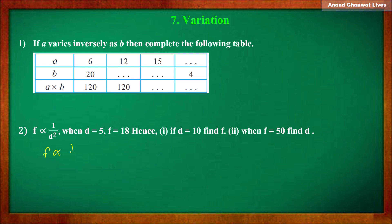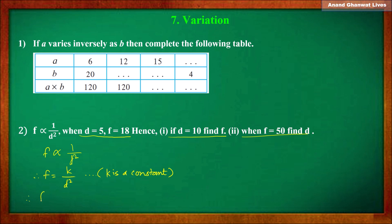Next example: f is inversely proportional to d squared. Additional information: when d = 5, f = 18. We have to calculate the value of f when d = 10, and the value of d when f = 50. Since f is inversely proportional to d², we write f = k/d², where k is a constant. Therefore f × d² = k. This is the equation of variation, and we need to calculate k.